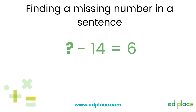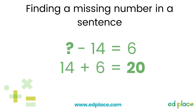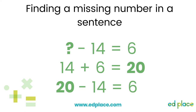Let's have a look at some example questions together. Something take away 14 equals 6. For this one we are going to need to do the inverse, which will be an addition sentence, because the missing number is at the beginning of the sentence. We use the numbers we have: 14 add 6, that makes 20. Let's check this with the original subtraction sentence: 20 take away 14 equals 6. Did you also notice this question is a number bond to 20?